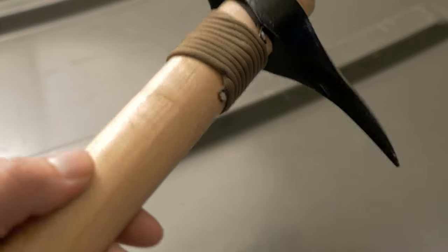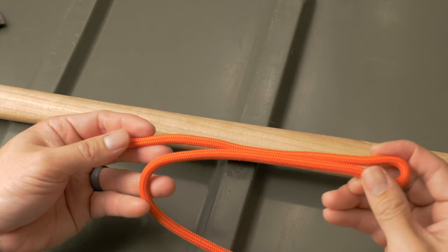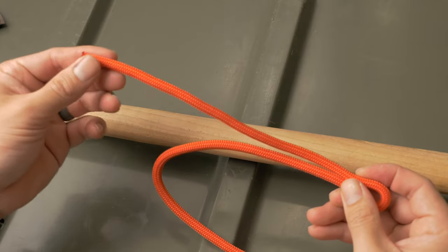This kind of whipping is nice because it looks good and it also lays flat so it doesn't get snagged on things. To begin, you're going to take your rope or your line and you're going to form a bite at the end of it.